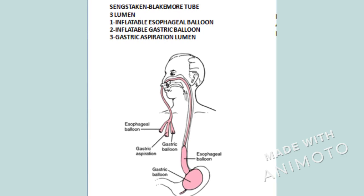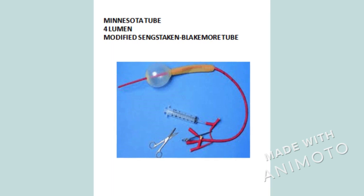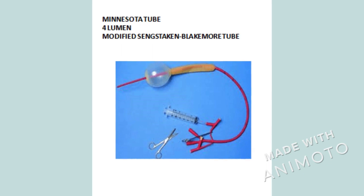The Minnesota tube is another type of esophageal and gastric tube. It is a four lumen tube, having an additional lumen that overcomes the disadvantage of the Sengstaken-Blakemore tube. This additional lumen is used for aspirating esophageal contents, so it is also known as the modified Sengstaken-Blakemore tube.